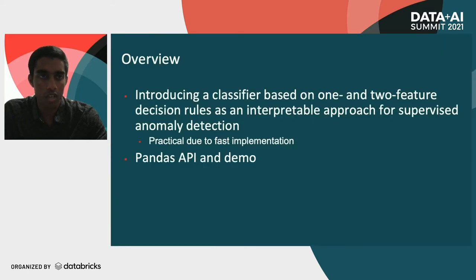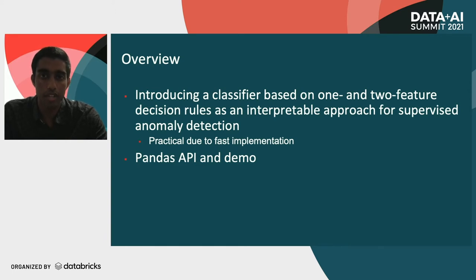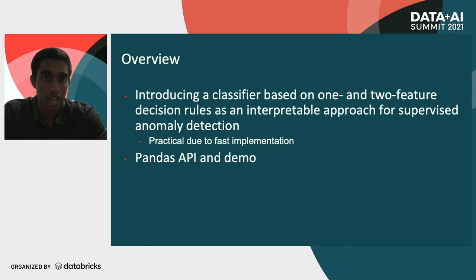Hi, I'm James Thomas and I'm going to talk about a fast decision rule engine for anomaly detection. As a brief overview, we're going to be introducing a classifier based on one and two feature decision rules as an interpretable approach for supervised anomaly detection. Even though this approach involves a lot of computation, we've made it practical because of the fast implementation that we have.